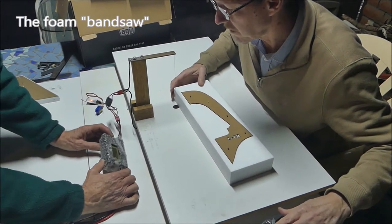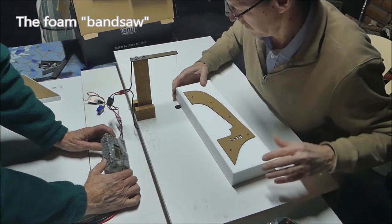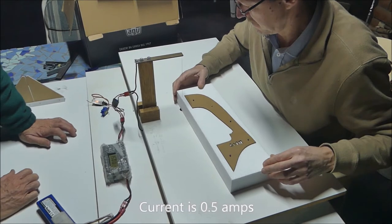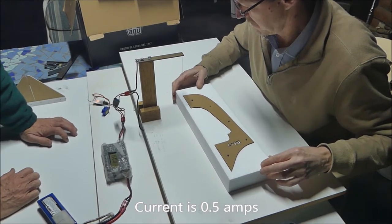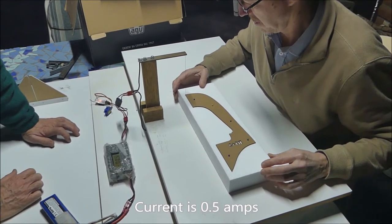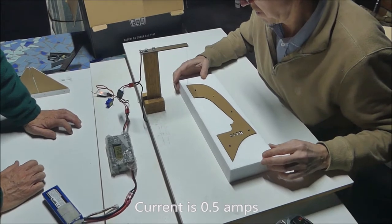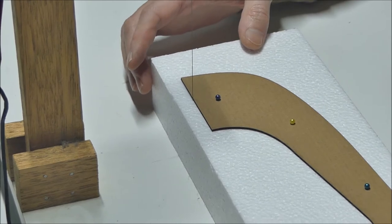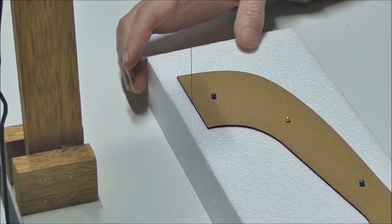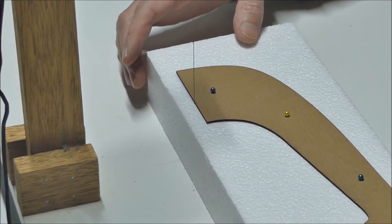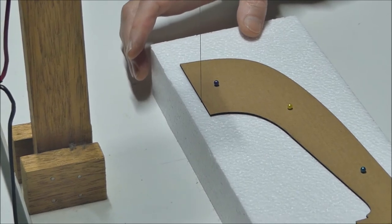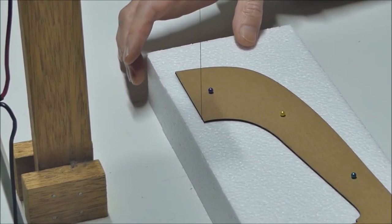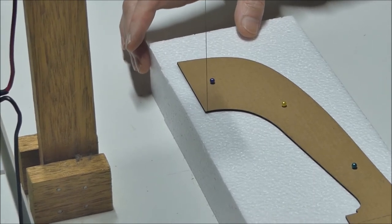Cutting around the template, cutting a square cut using the hot wire bandsaw. The trick is not to put too much force against the card because the wire will bow and it won't be cutting vertically anymore.